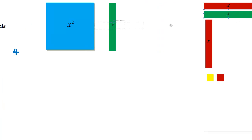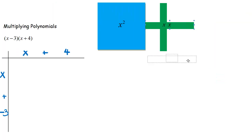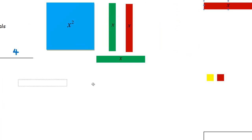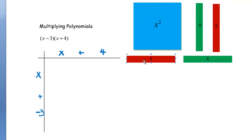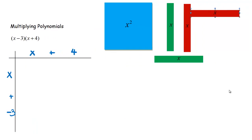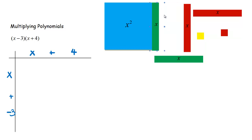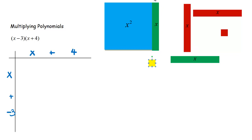This rectangle is considered a positive x, and this one is my negative x. This small square is my positive one, and this is my negative one. The rectangle is x because it has the same length as the x term, but its thickness equals one unit. So it's x times one. And the small square is one times one — that's our unit tile.